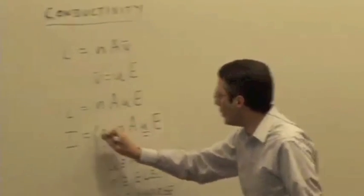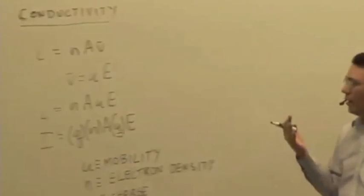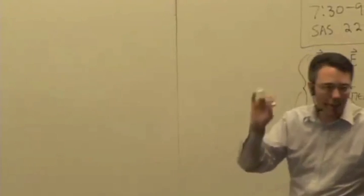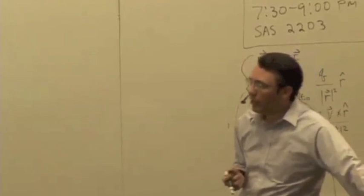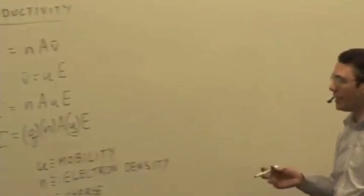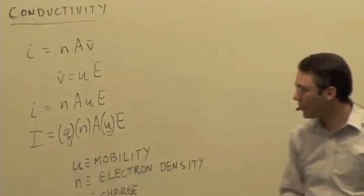Well, all of those quantities, Q, N, and U, are properties of the material. The area is a property of the geometry. It depends on how big you make the wire. But Q, N, and U are all properties of the material, and they all affect how easy it is to get a current to flow given a certain electric field.